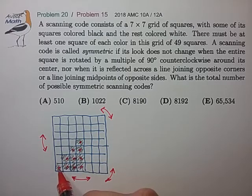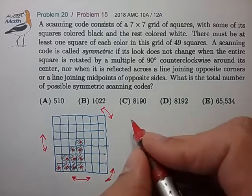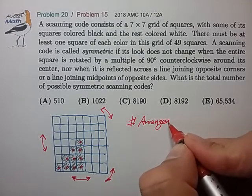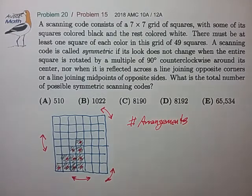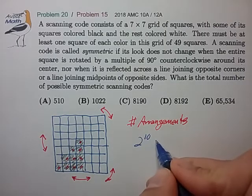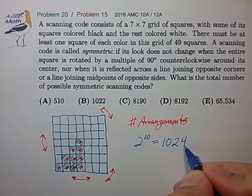Each square has a choice of black or white, so the total number of arrangements is simply 2^10, which is 1024.